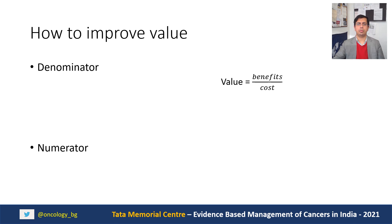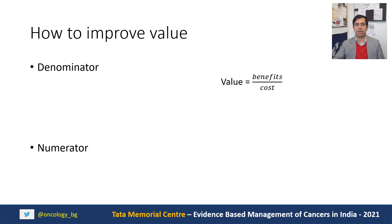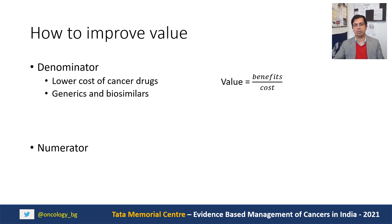So the question is: how can we improve value? There are two components — the denominator of cost and the numerator of clinical benefit. On the cost side, there are different strategies: should we use more generics and biosimilars? Should we focus more on repurposable drugs, like dexamethasone in COVID-19, to find similarly repurposable drugs for cancer that would provide cheaper alternatives?